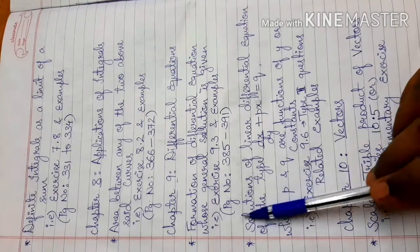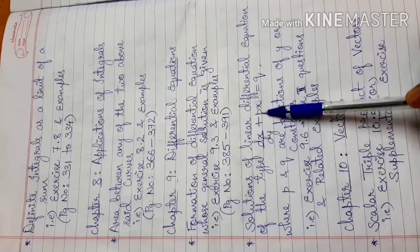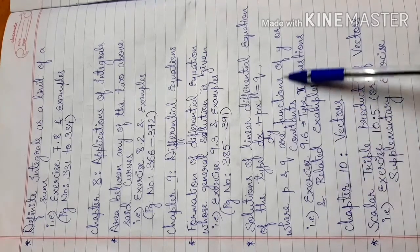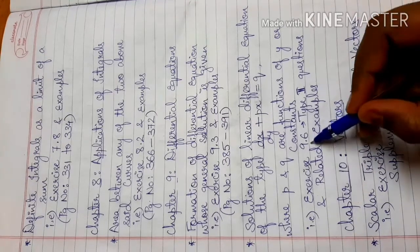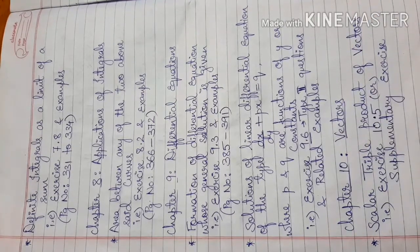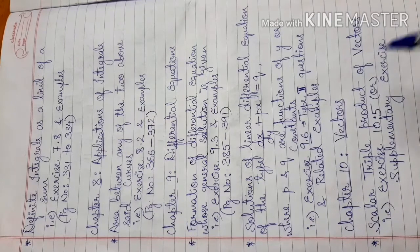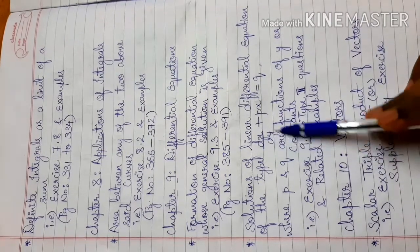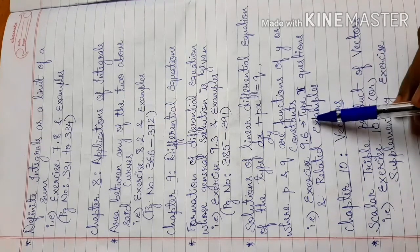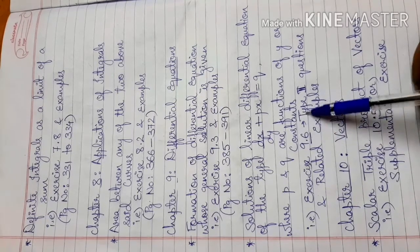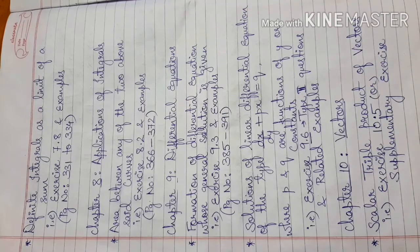Chapter 9, Differential Equations. The first deleted topic is the Formation of Differential Equations whose general equation is given — Exercise 9.3 and related examples, page number 385 to 391. The second deleted topic is the Solution of Linear Differential Equations of the type dx/dy + Px = Q, where P and Q are functions of y or constants — Exercise 9.6 is fully deleted. There are two types of questions, but the second type — dx/dy — is deleted.